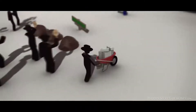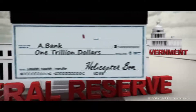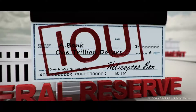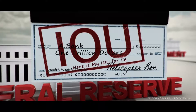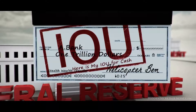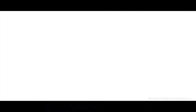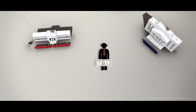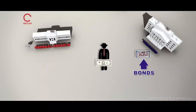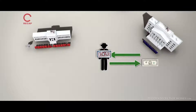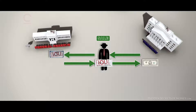The banks then take that currency and buy more bonds at the next Treasury auction. Now it's very important that you understand this process. The Treasury issues IOUs — bonds. The banks then buy those IOUs with currency. The Federal Reserve then writes IOUs — checks — and hands them to the banks in exchange for the Treasury's IOUs, the bonds. And currency is created.